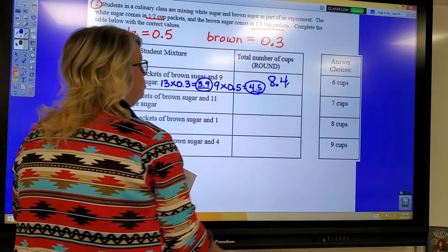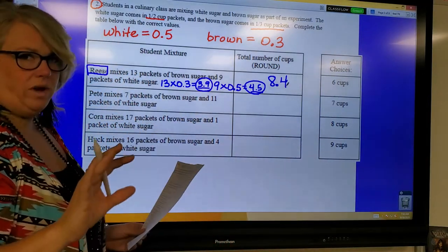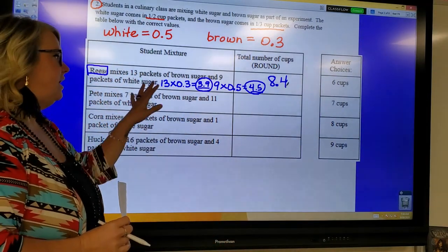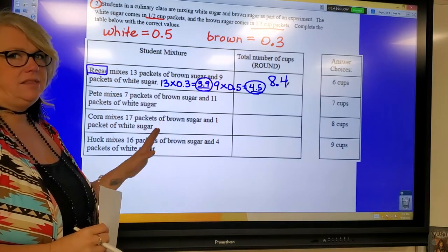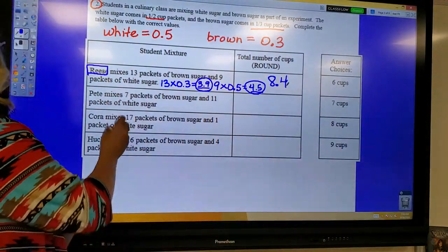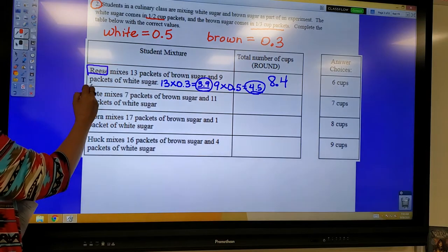So we're adding the 3.9 plus the 4.5, and that would give me 8.4. Now, if I was rounding, I would probably round down to 8. But I'm just going to wait a second and get all of my other answers, and then I think that I'll be able to match them up better. So I'm going to move on to Pete. I'm going to do Pete in red.